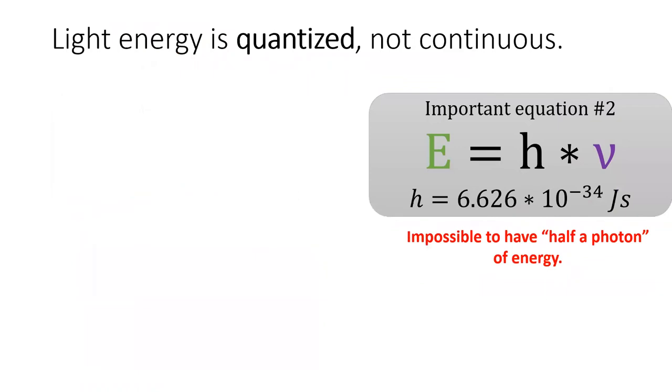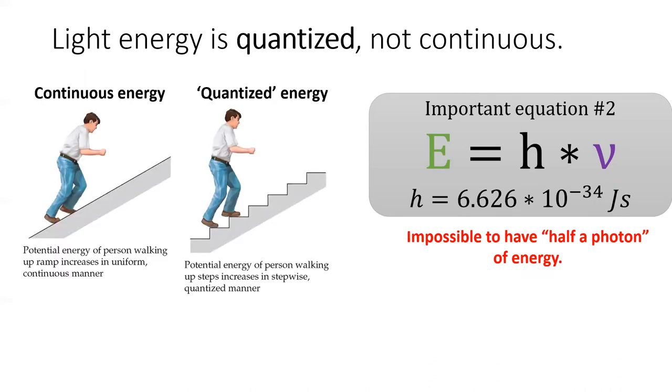The idea that light is a particle with a specific energy means that we can only have amounts of energy in whole number multiples of h times nu. In other words, we can have 10 photons, we could have 11 photons, but we cannot have 10 and a half photons of energy.